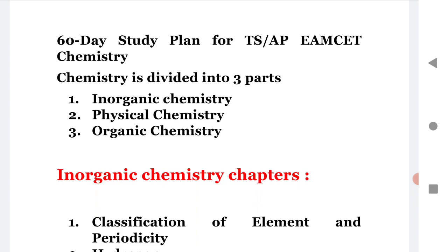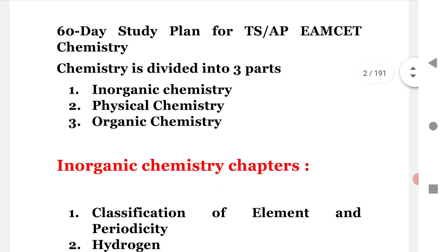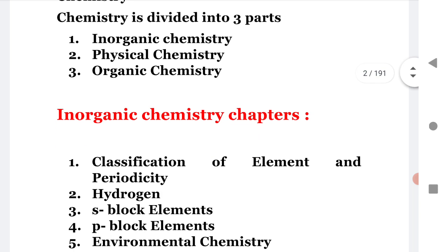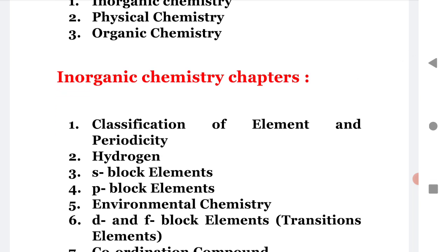But if you want to score 40 out of 40, that means you need to practice all these three: inorganic chemistry, physical chemistry, and organic chemistry. So let us see what are the chapters in each.